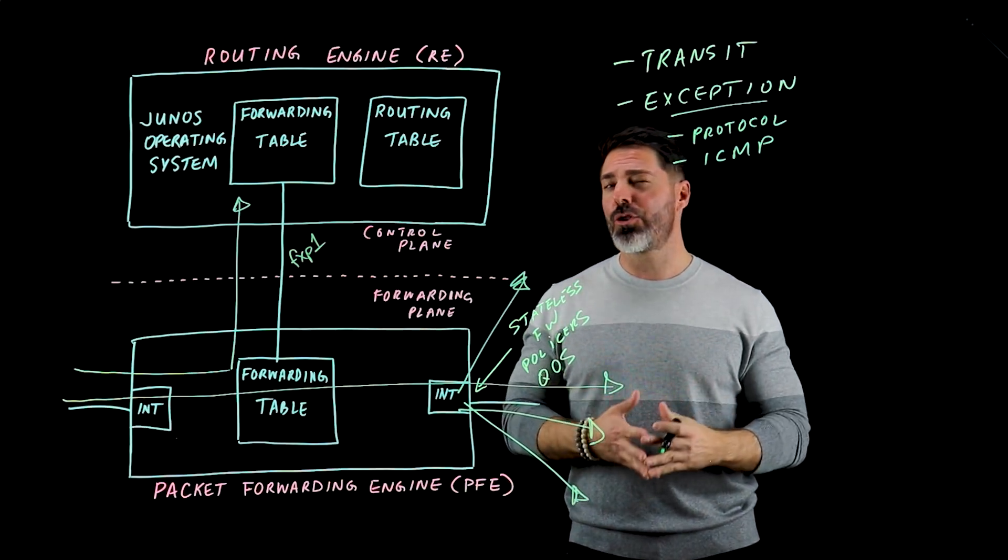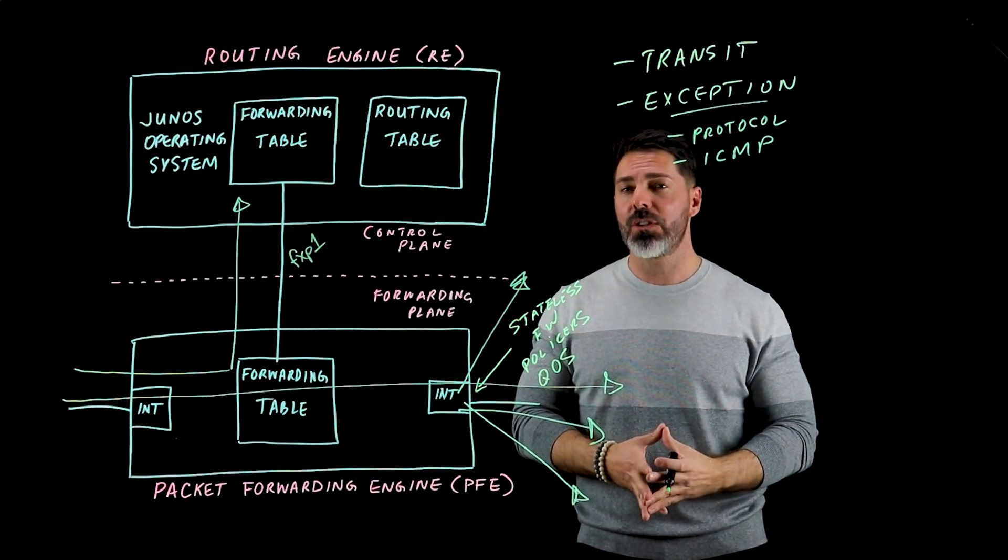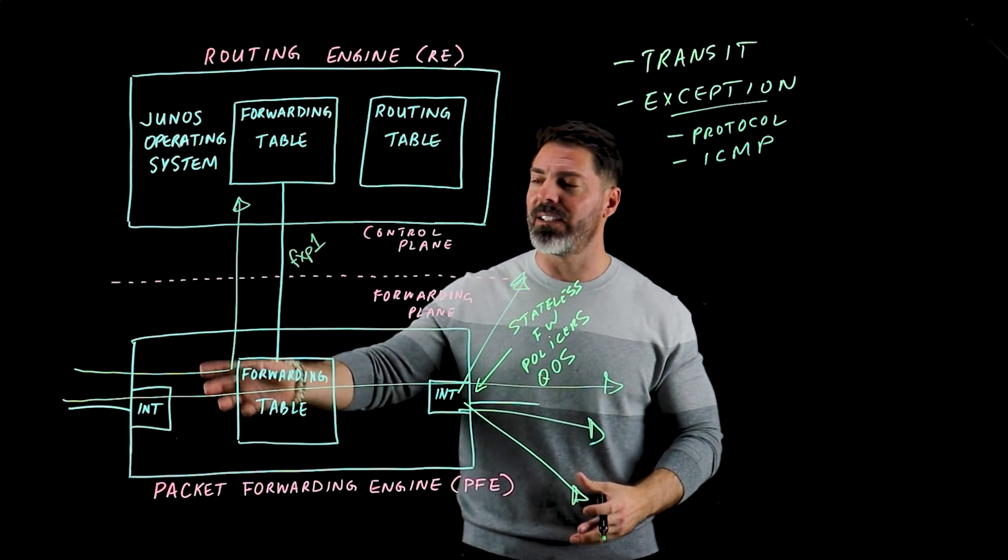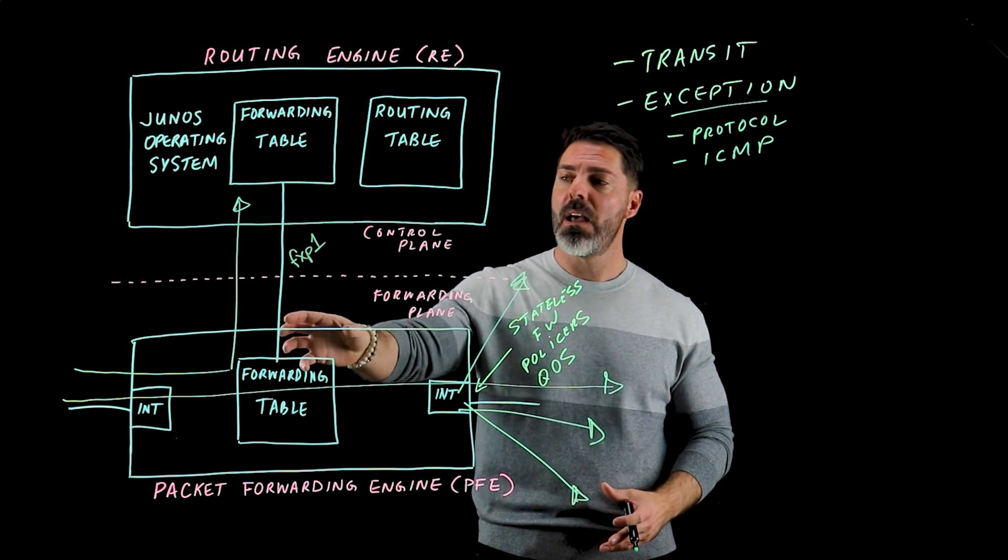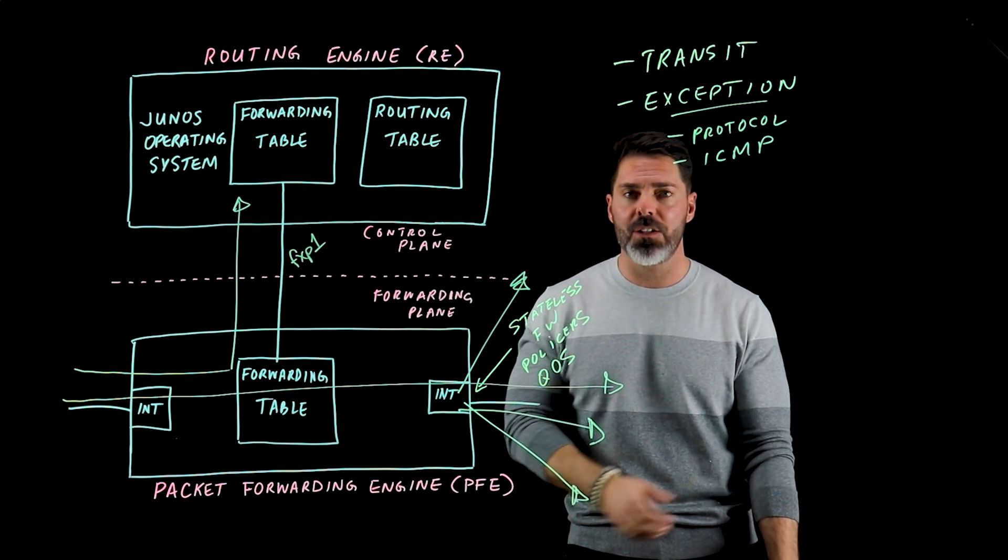We want to make sure that an adversary or bad actor wouldn't be able to necessarily starve the resources between the control plane and the packet forwarding engine.